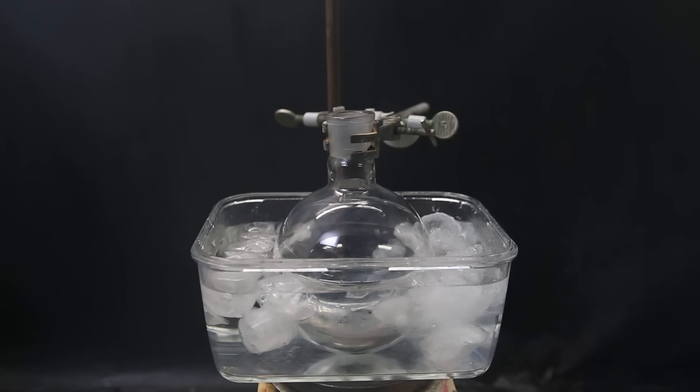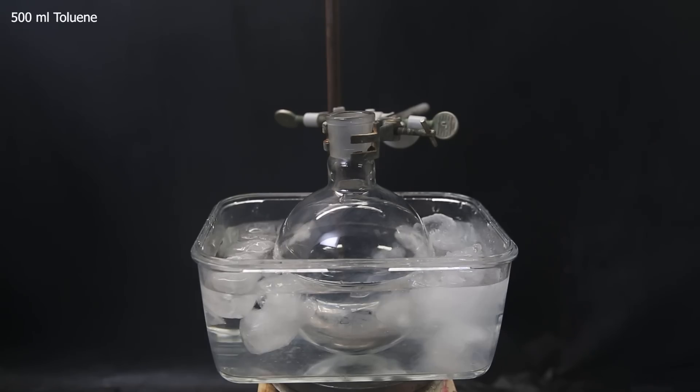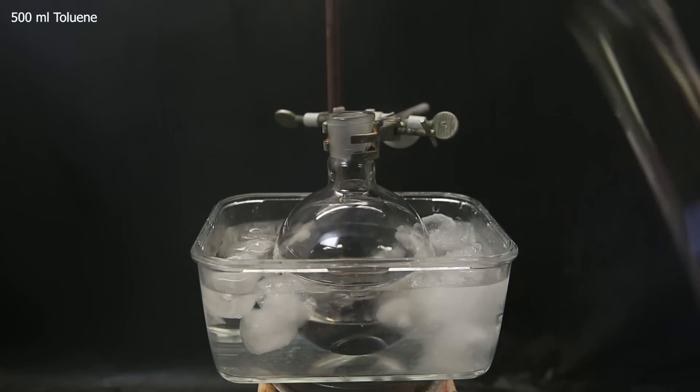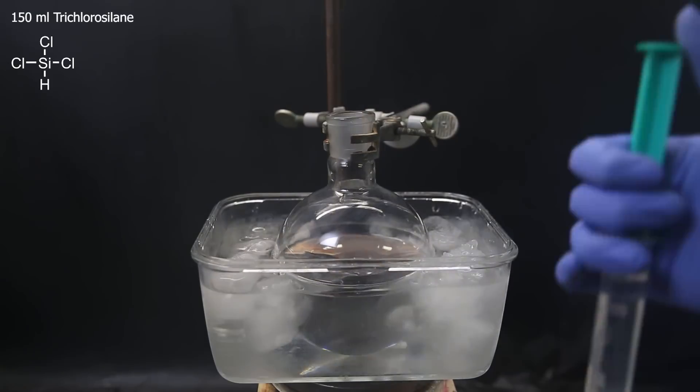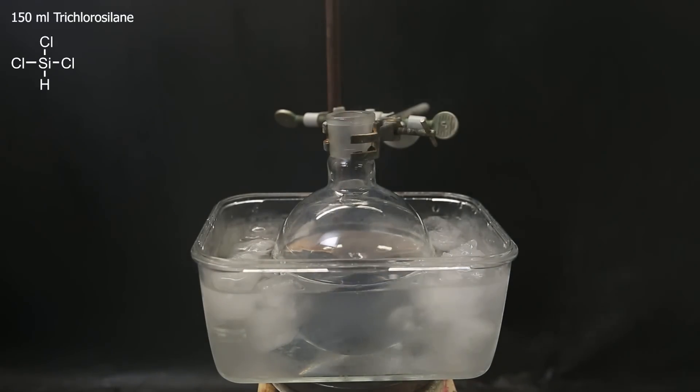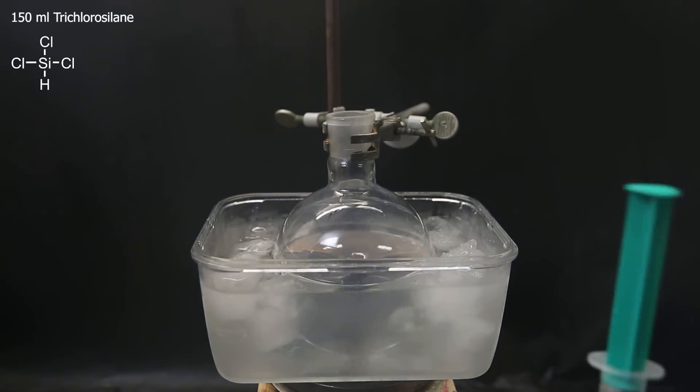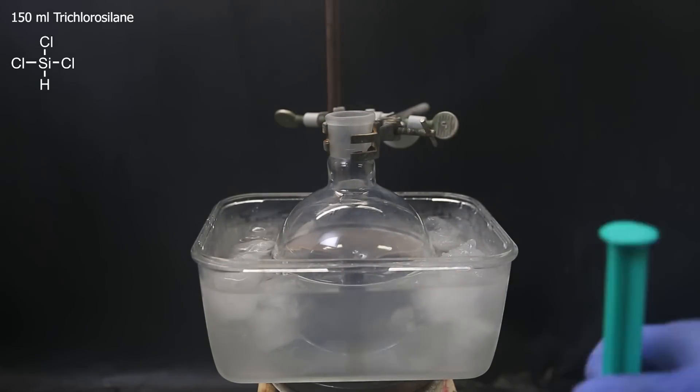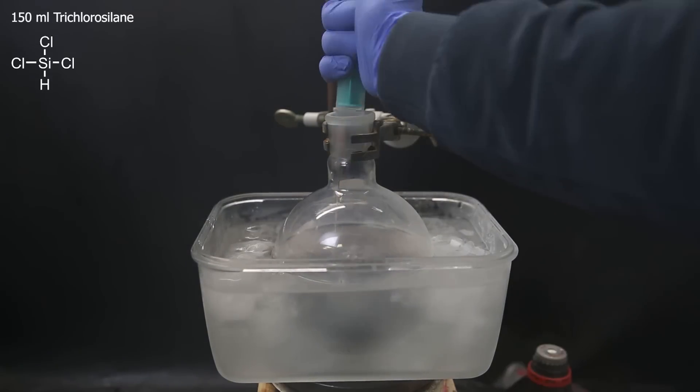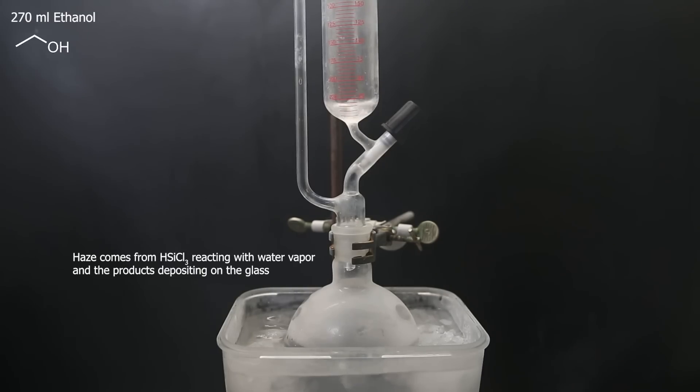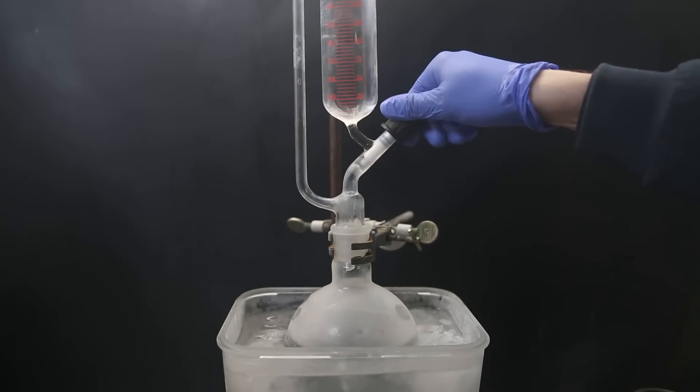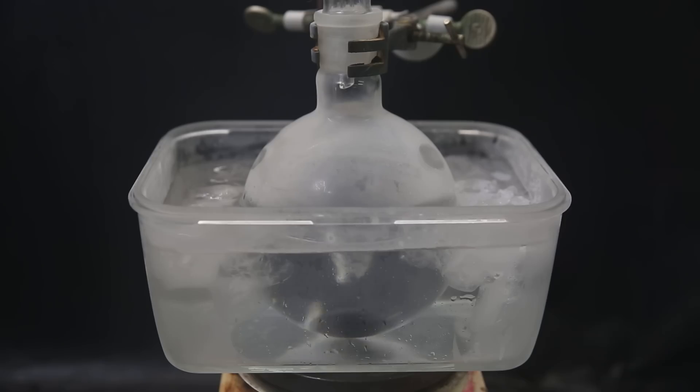So for that, I set up a large flask in an ice bath, and add in 500 ml of toluene as a solvent. I then add in 150 ml of trichlorosilane as the first reactant with a syringe. I then attach a dropping funnel, and add in 270 ml of ethanol as the second reagent. I then gradually drip the ethanol into the flask, and they react pretty much immediately. I just let it all drip in, and then let it stir for two more hours.